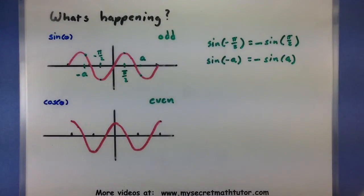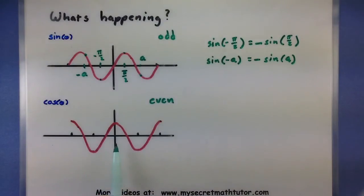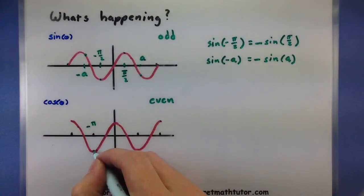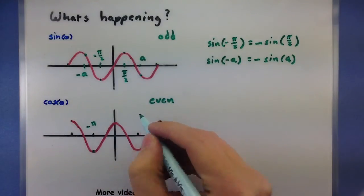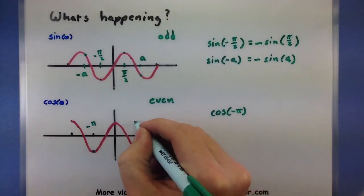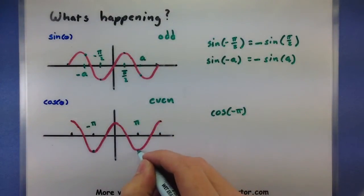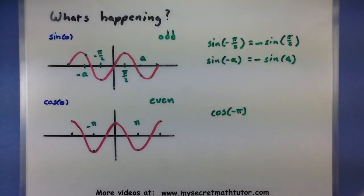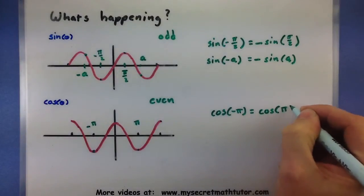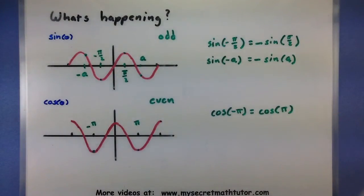Now for cosine, it's even nicer than sine. Notice how everything is symmetric with respect to the y-axis. Say I come along and I plug in something like negative pi — I get a value like negative 1. If I plug in a value of positive pi, I still get the same value, negative 1. So this shows that when I plug in negative pi or positive pi, both will give me the same value.